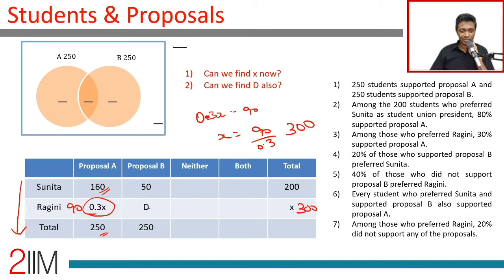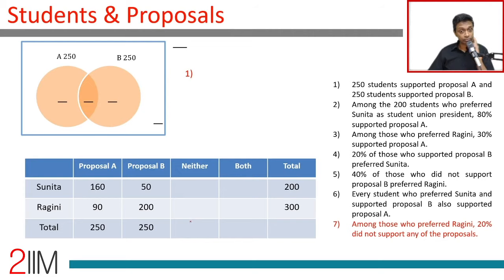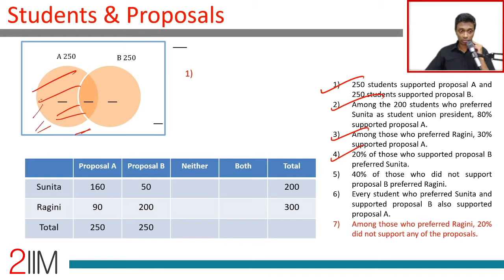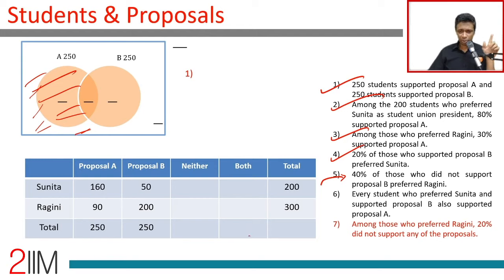We have now filled in a bunch of values and accounted for constraints 1 through 4. Constraint 5: 40% of those who did not support proposal B preferred Ragini. 'Not B' means A only and neither — this will be tricky because we don't know those data points yet.